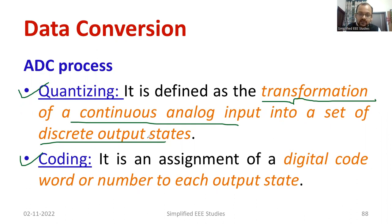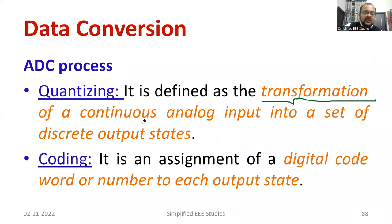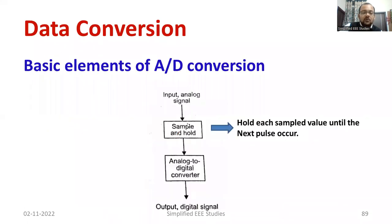In continuation with quantizing, there is another process called coding. The allocation of a digital code for each output stage is generally called coding. If it is high, we consider one; if it is low, we consider zero. Only two states are available in the case of ADC — one is the high state, another is the low state. You can represent the high state and low state using binary numbers 1 and 0. These are the two important processes involved in every type of ADC.